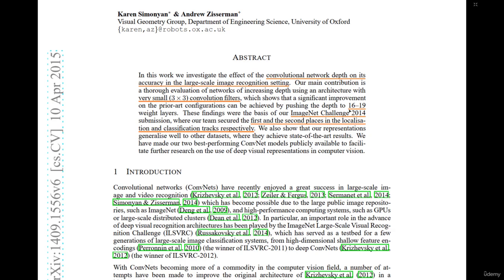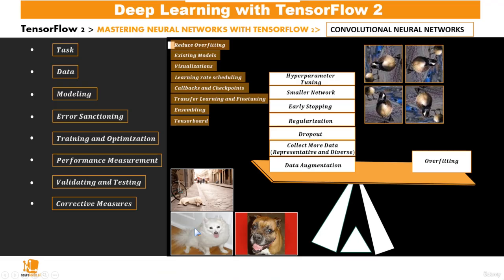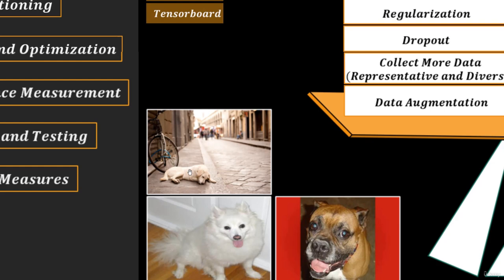Basically, they built VGG with 16 to 19 layers. These findings were the basis of their ImageNet challenge 2014 entry, where their team secured first and second places in the localization and classification tracks respectively. On the localization track, the model has to find exactly where a dog is positioned in the image, whereas with classification, it just has to detect that there is a dog in the image.